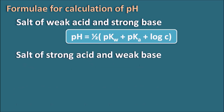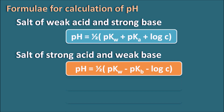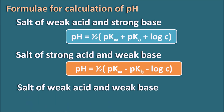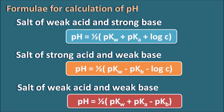For a salt of strong acid and a weak base: pH = ½(pK_w − pK_b − log c). This is easy to remember because for an acid it is always plus and for a base it is always minus. Finally, for a salt of weak acid and weak base: pH = ½(pK_w + pK_a − pK_b). Notice that in this third case, the pH is independent of concentration — there is no log c term in the equation.